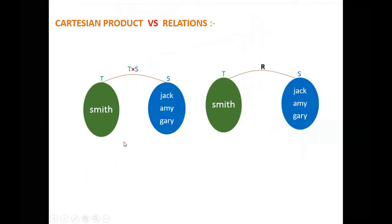Let us check this one in a Venn diagram. This is the Cartesian product of T and S, and this is the relation from the earlier two situations. Smith with Jack, Smith with Amy, Smith with Gary - that's the Cartesian product. For the relation 'teaches', we have Smith with Jack and Smith with Amy. So we have two elements here in the relation, and three elements in the Cartesian product.